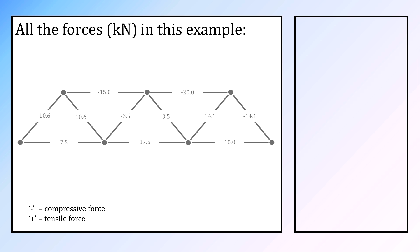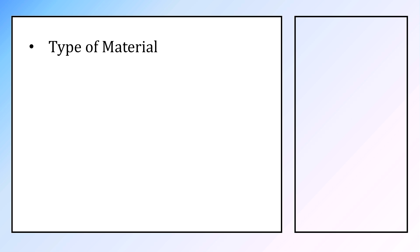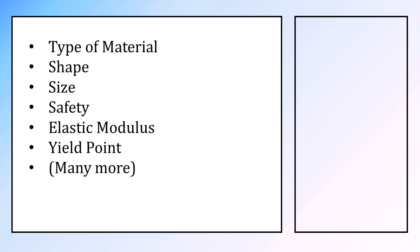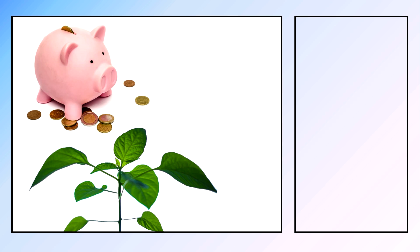When taking type of material, shape, size, safety, elastic modulus, and yield point into account, structural engineers can do a lot of trial and error that will optimize economic cost, environmental cost, and aesthetics.